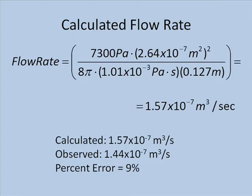Going to the literature, we find that the viscosity of water is 1.01 × 10⁻³ pascal seconds. We have all of the experimental data we need. Let's calculate the flow rate. Now let's take these values and plug them into Poiseuille's law to calculate a theoretical flow rate for this IV system.